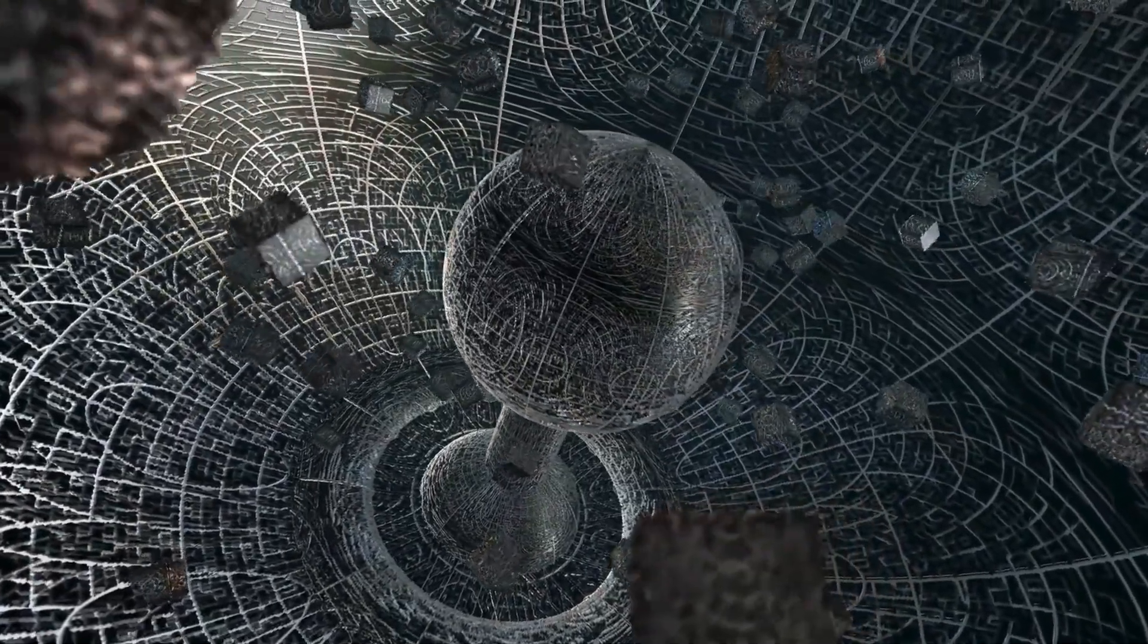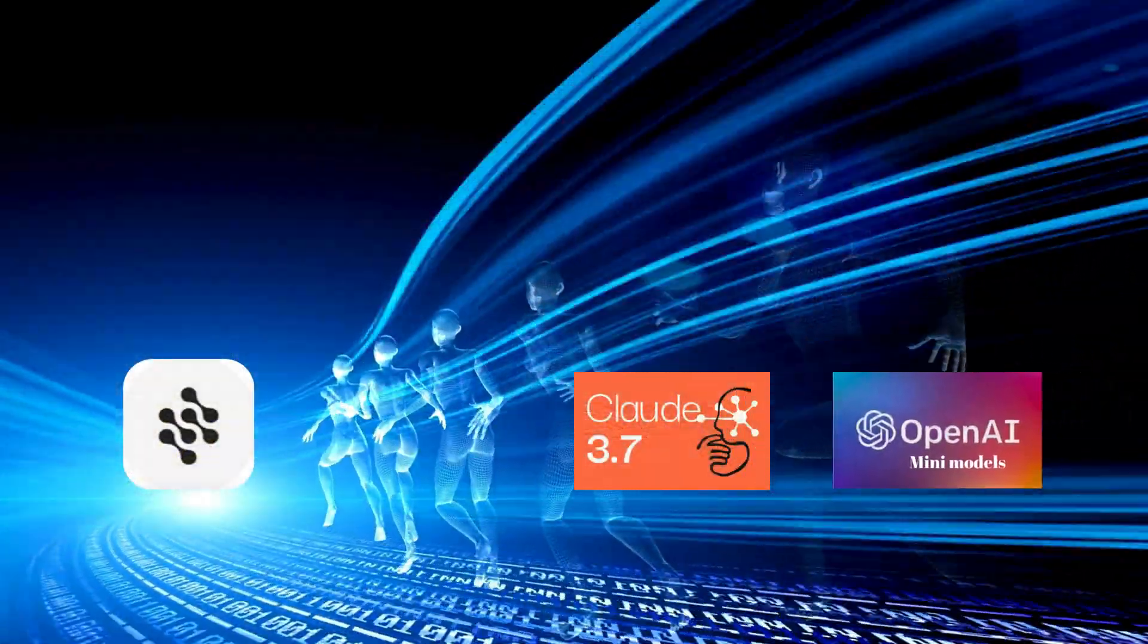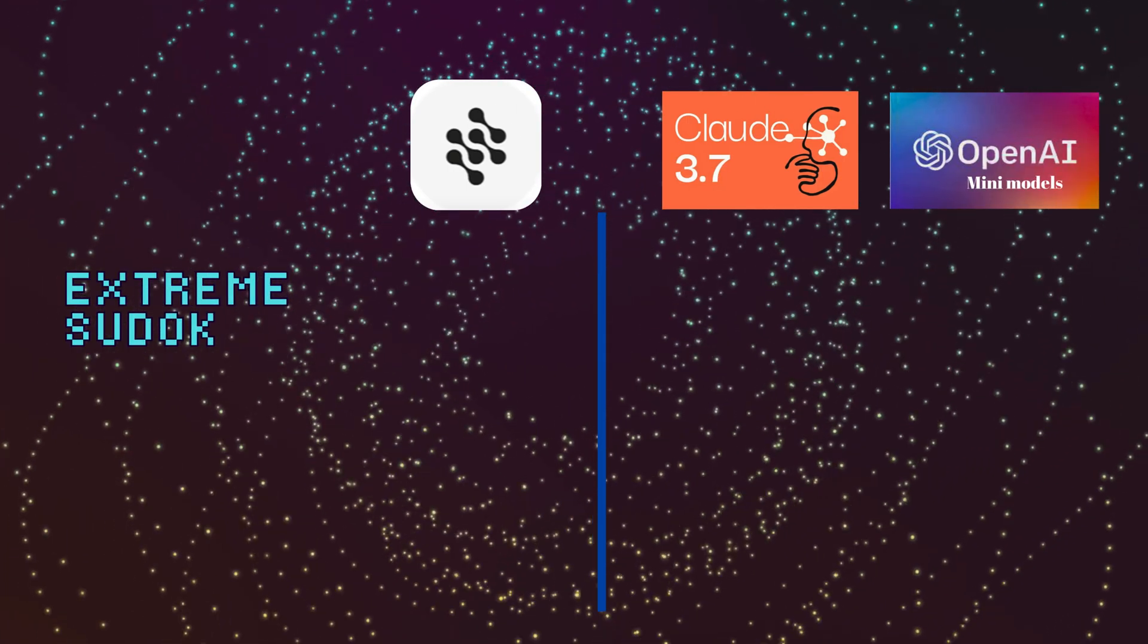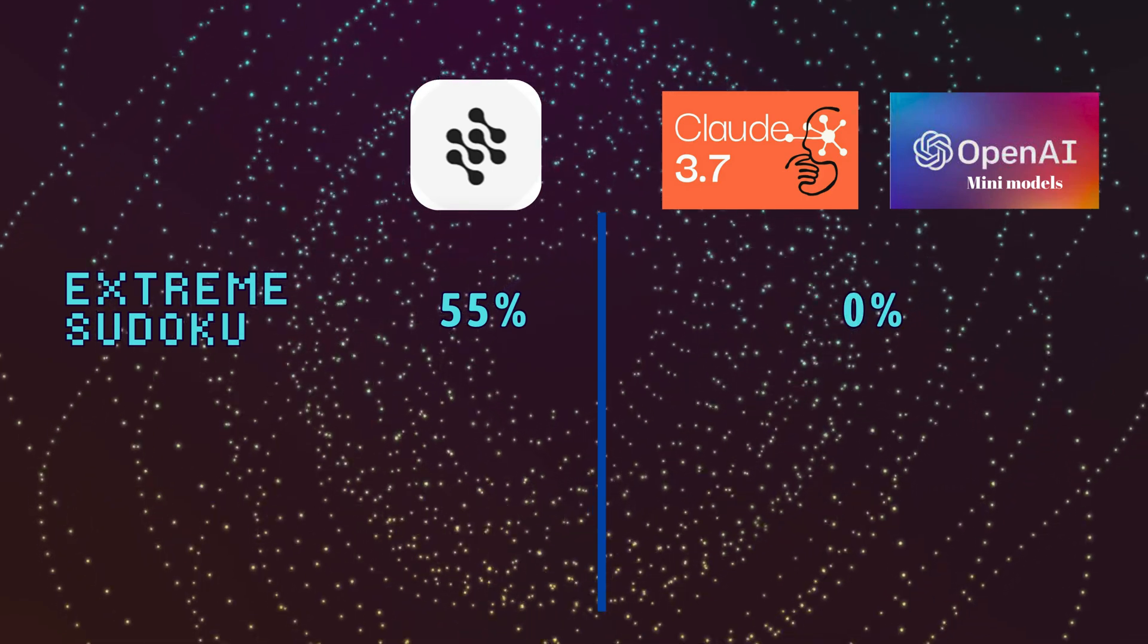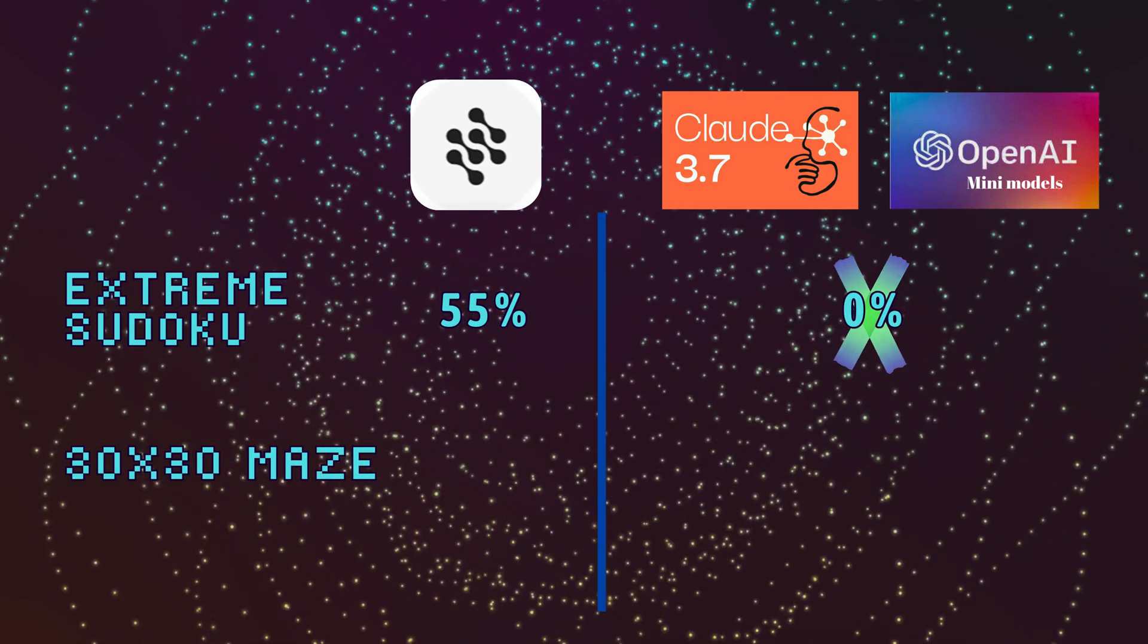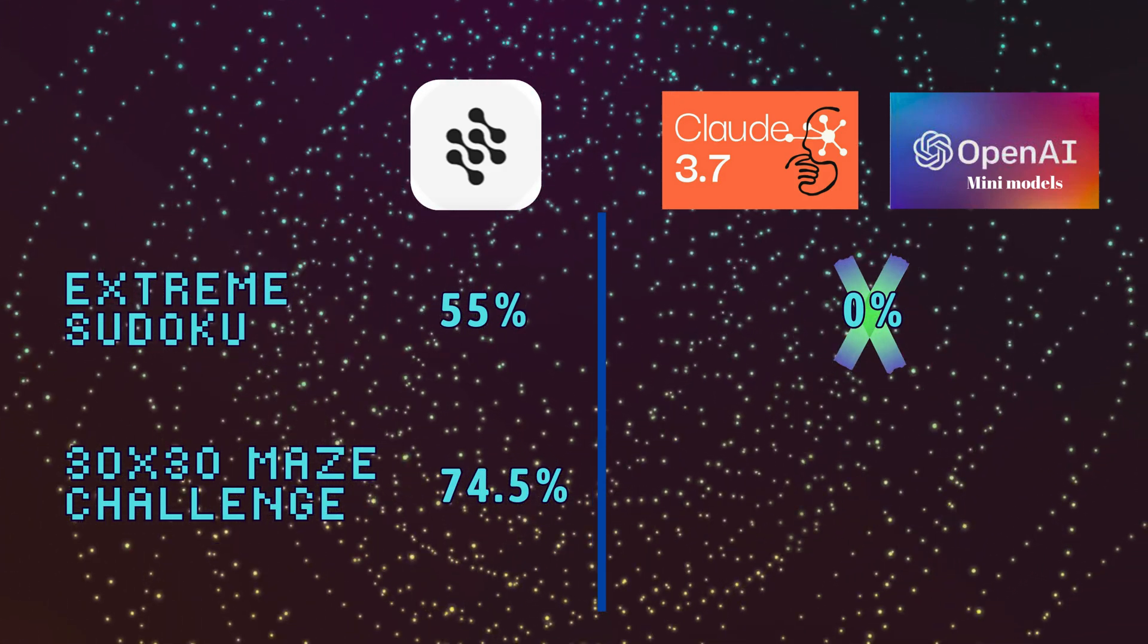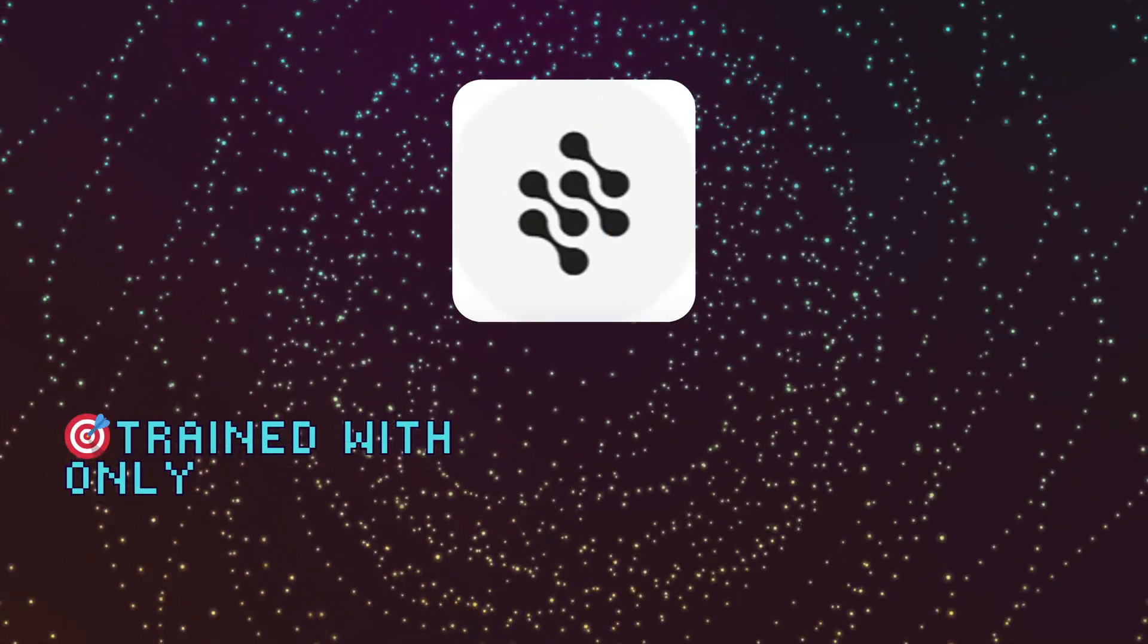This isn't theory. HRM has outperformed Claude 3.7 and OpenAI mini on reasoning benchmarks. On Extreme Sudoku, HRM solved 55%. The others, 0%. On a 30x30 maze challenge, HRM found the optimal path 74.5% of the time. The others, again, 0%. And here's the craziest part.